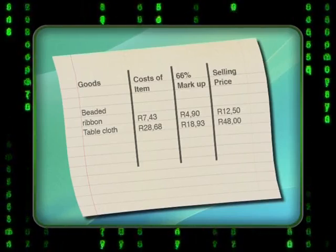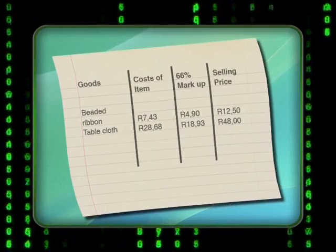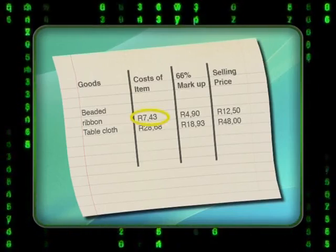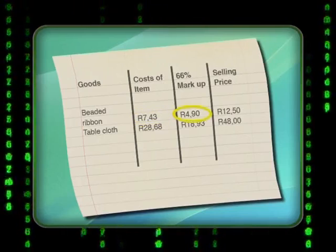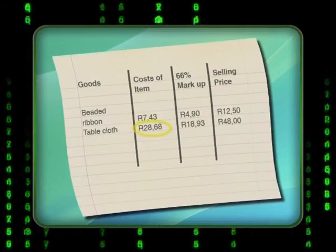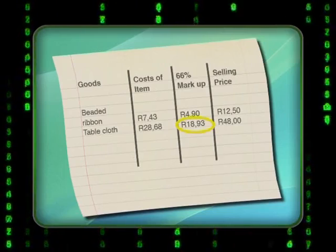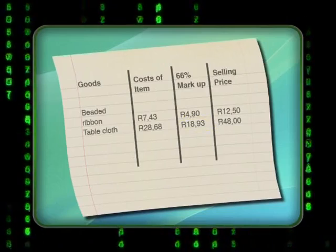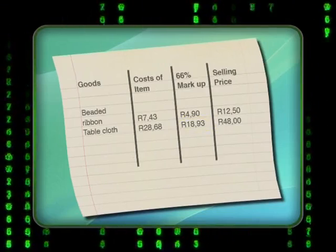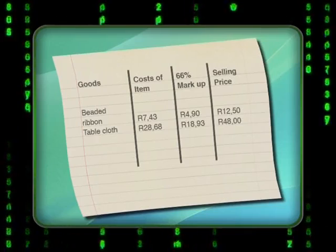Good question. But the best way to answer is to look at the table showing the mark-ups Madi adds onto her ribbons and onto her tablecloths. Remember, you've worked out what 66% of the cost of making each item was and added this on to get the new selling price. Even though you increased the prices of all the items by the same percentage, the actual amount of money is different. A ribbon only costs 7.43 to make, and so the 66% markup is only 4.90. A tablecloth costs much more to make, and so the same percentage markup results in a bigger amount, 18.93. After adding in the markup, you rounded off your prices to the next 50 cents so that Madi wouldn't have to worry about dealing with lots of small change.